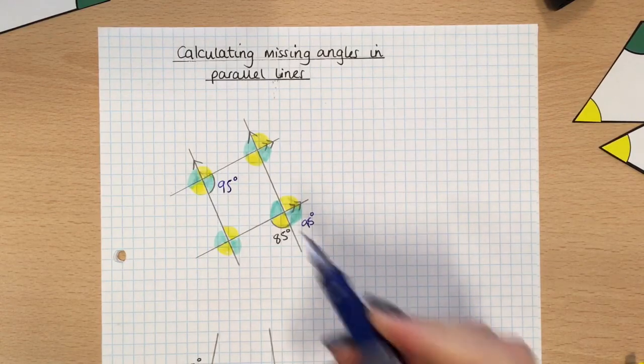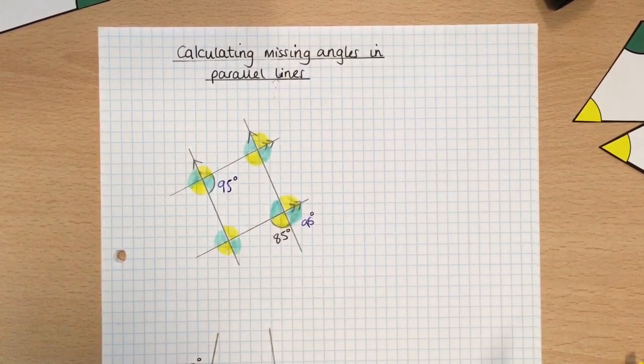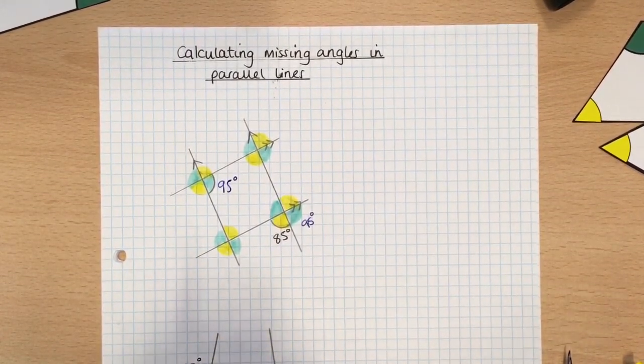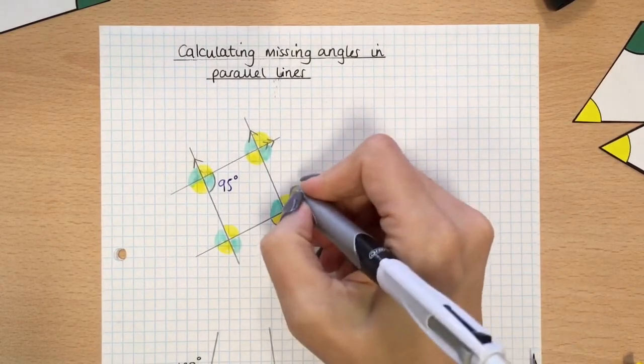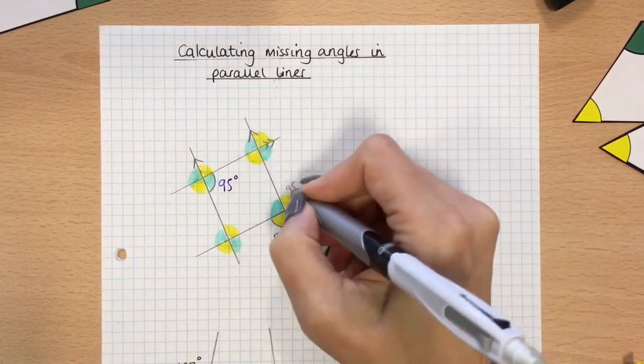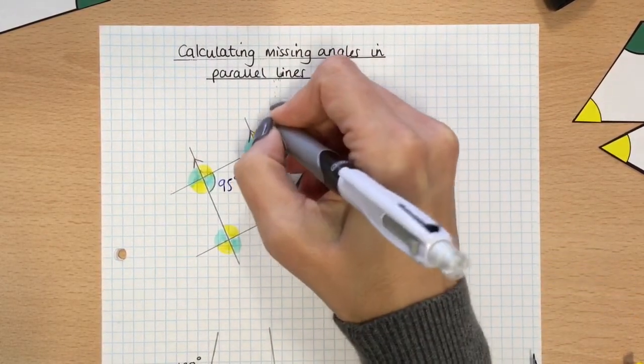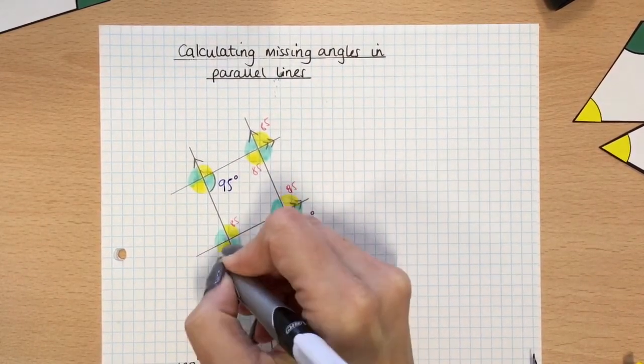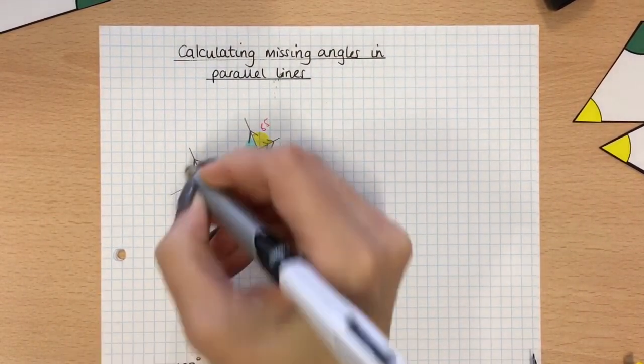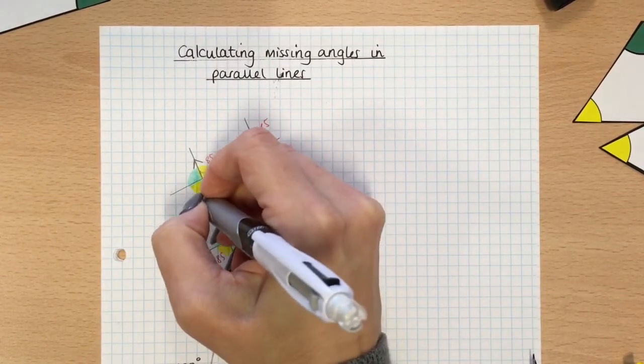There is nothing wrong with you going through this diagram, putting in every single angle. So like I'm going to do in red, I could have labelled all, sorry that one should be 85, all my yellow angles 85. I could have done that, you didn't have to, but you could if you wanted to.